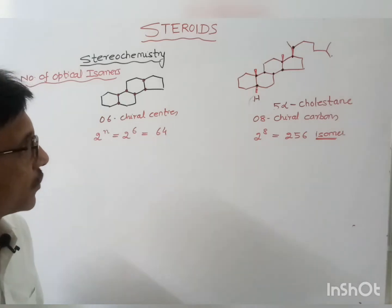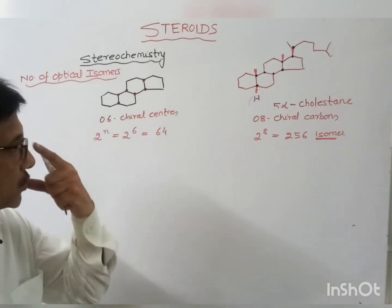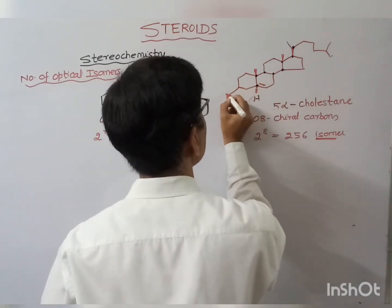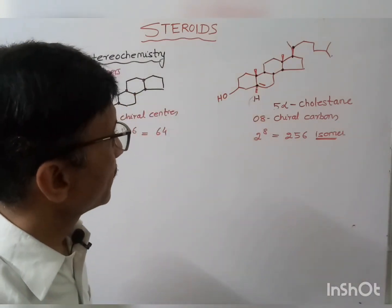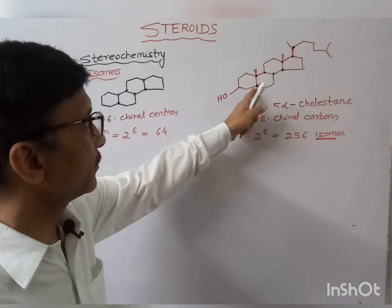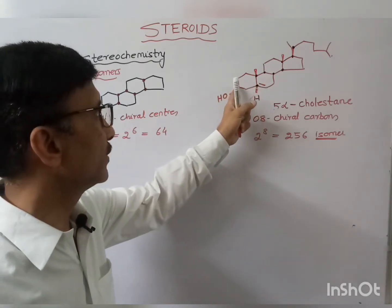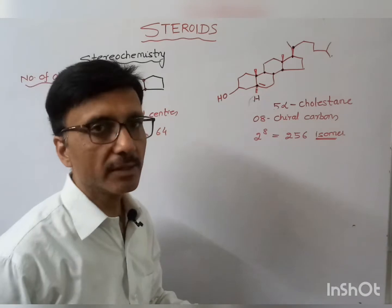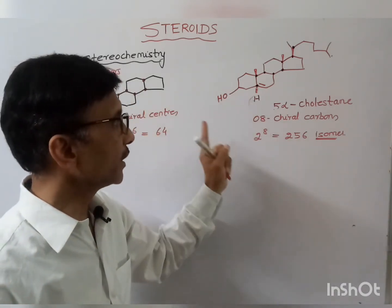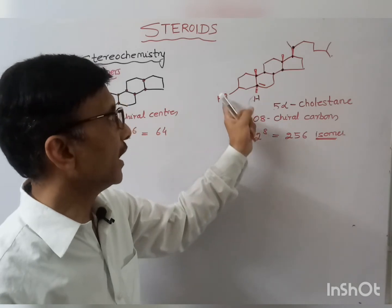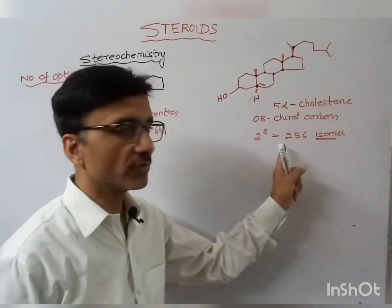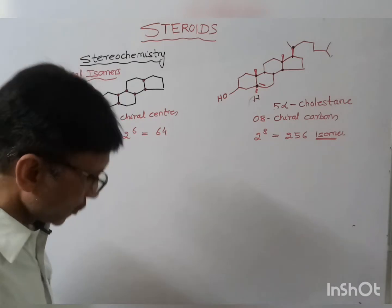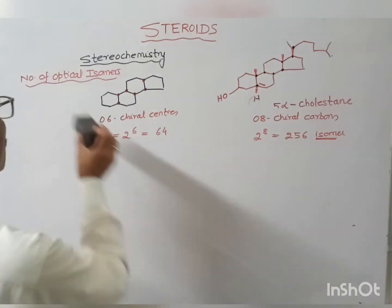If we write the structure of cholesterol, cholesterol contains one double bond and one OH group. In that case one carbon is no longer a chiral center, but a new chiral center is generated. So in cholesterol the number of chiral centers is again eight, and the total number of optical isomers is 256. Now let's see the geometrical isomers.